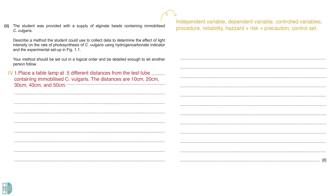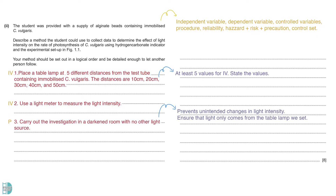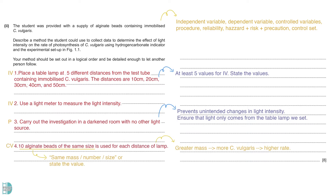We can set five different light intensities by varying the distance between a table lamp and the test tube containing immobilised C. vulgaris. You should always include at least five different values for your independent variable and state the values in your answer. A light meter can be used to measure the light intensity. The investigation should be conducted in a darkened room with no other light source, to prevent unintended changes in light intensity. We want to ensure that the light only comes from the table lamp we set. There are a few control variables that should be standardised. The same mass, number, and size of alginate beads are used for each distance of the lamp.